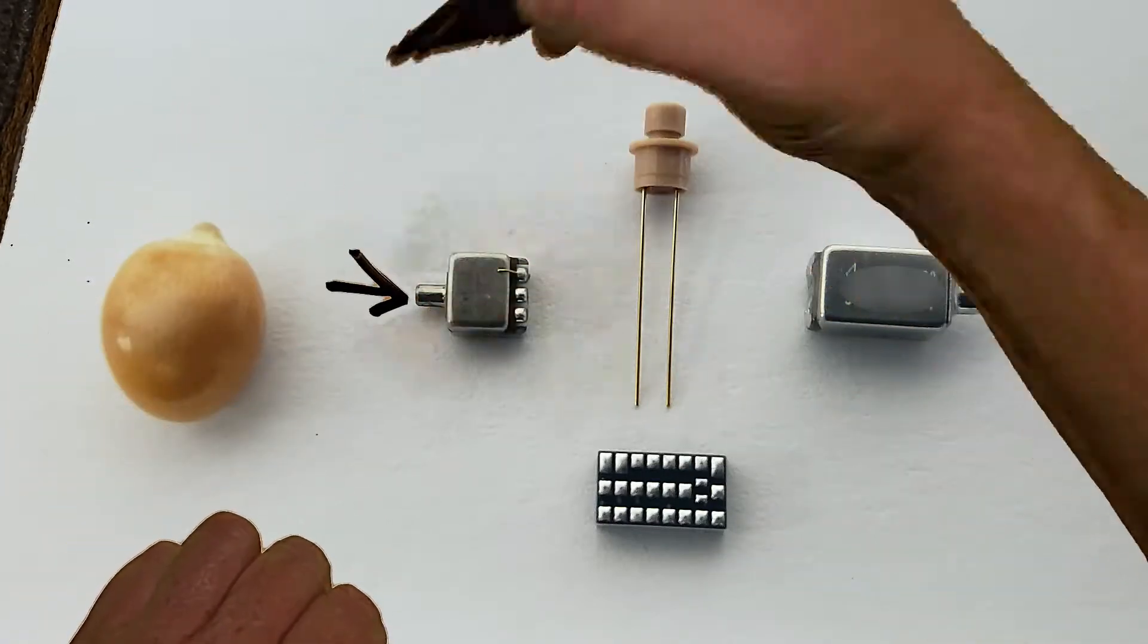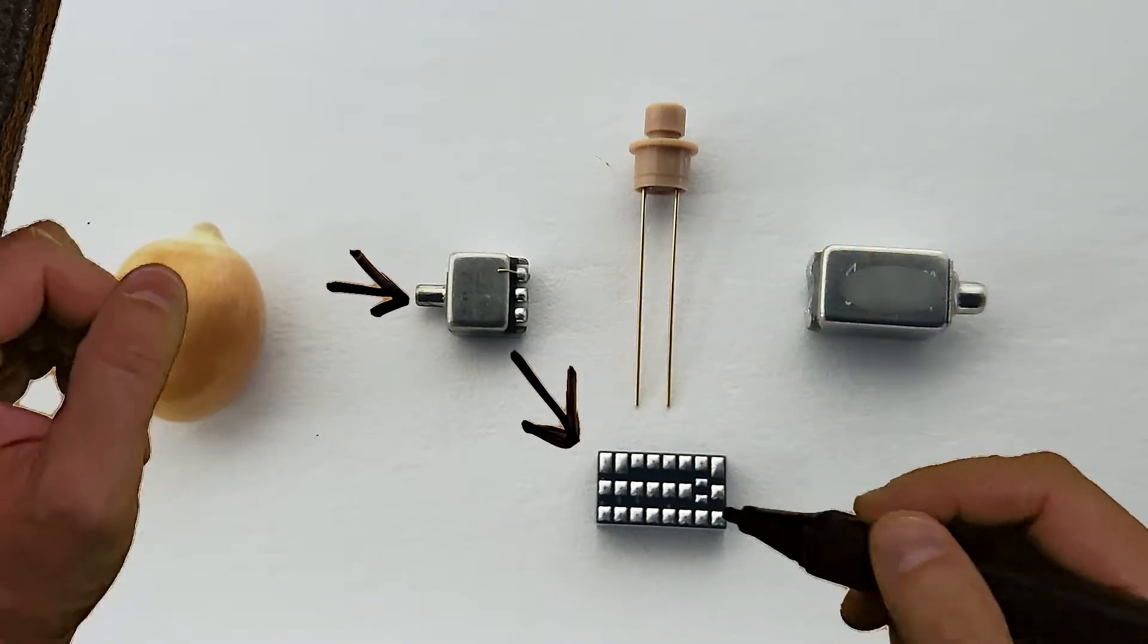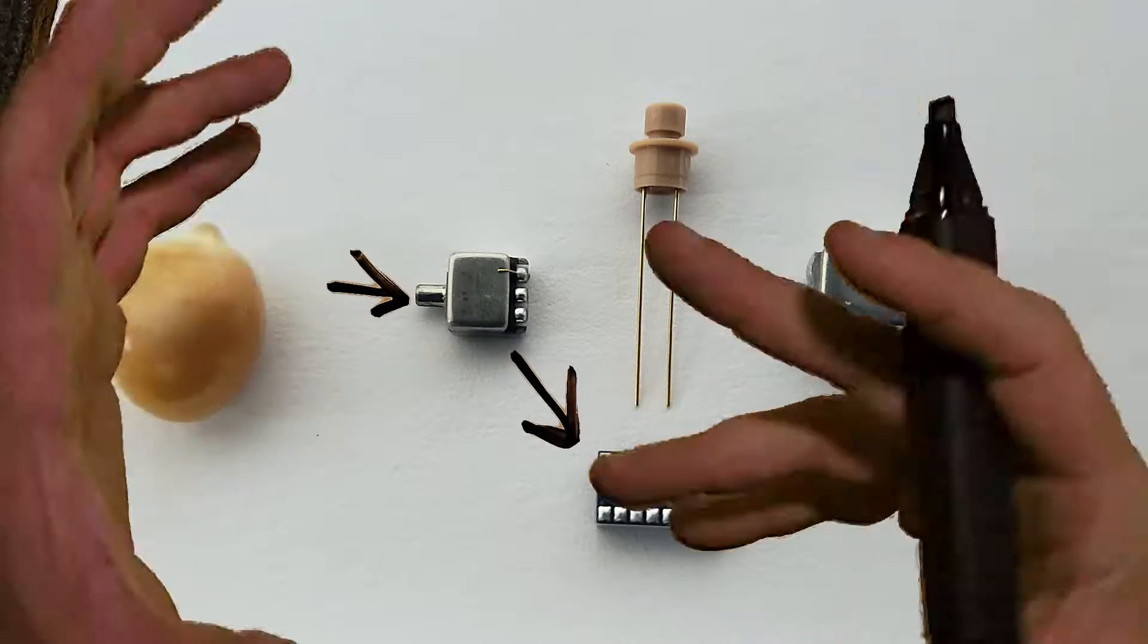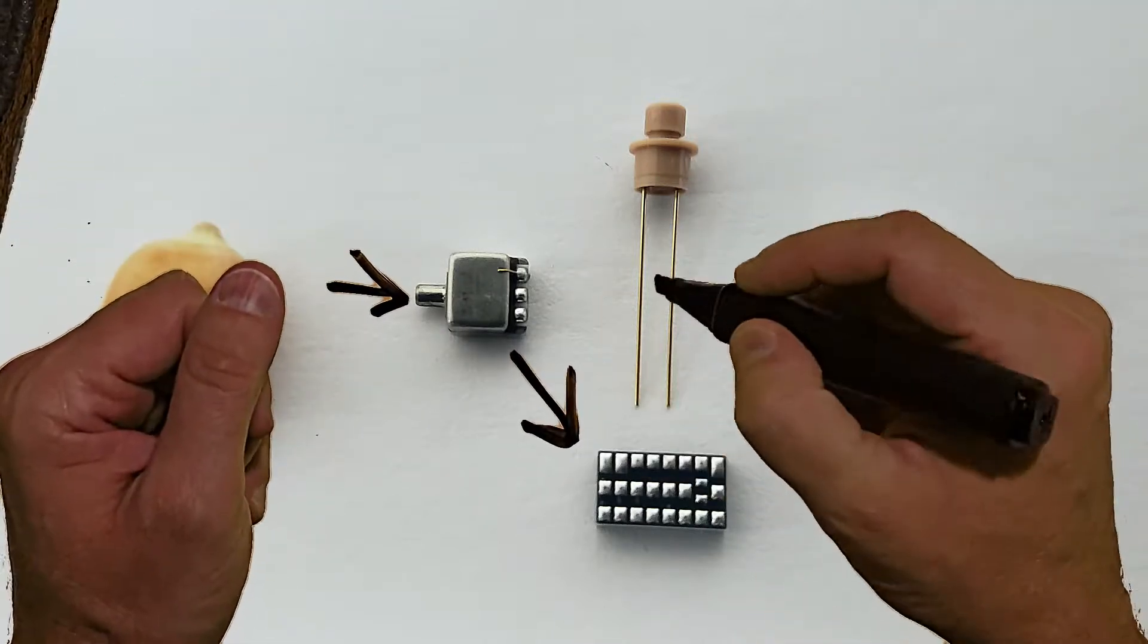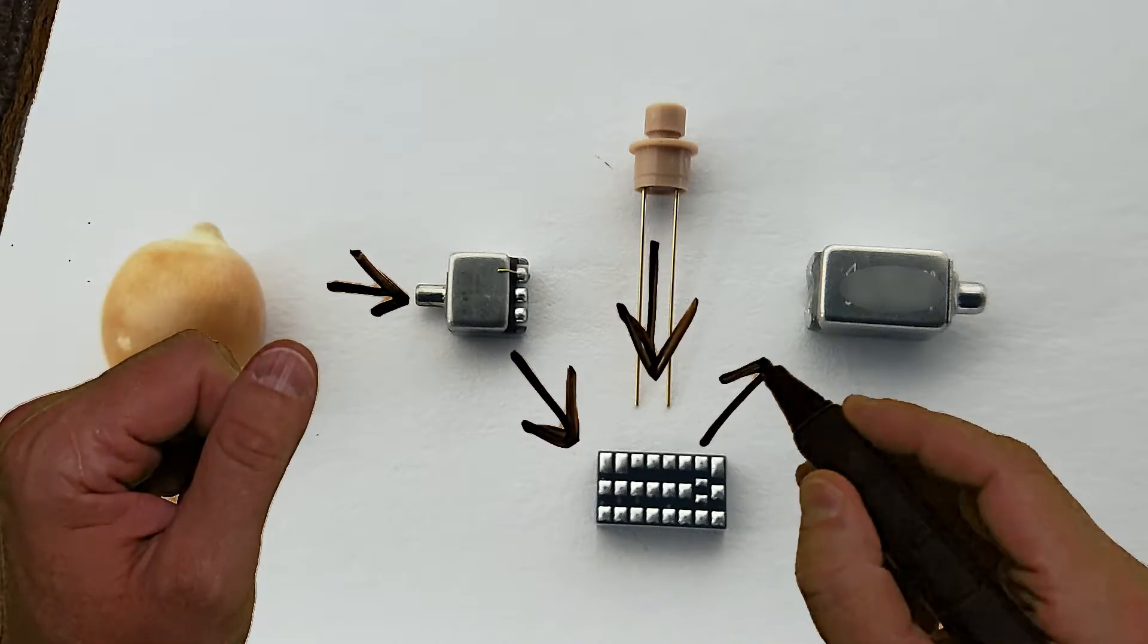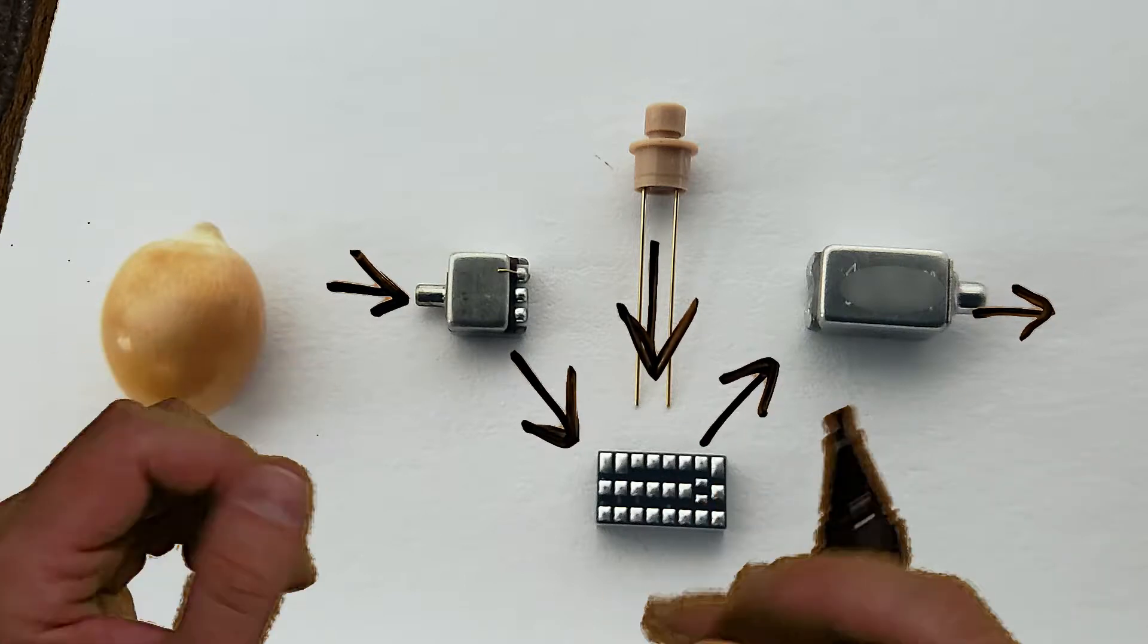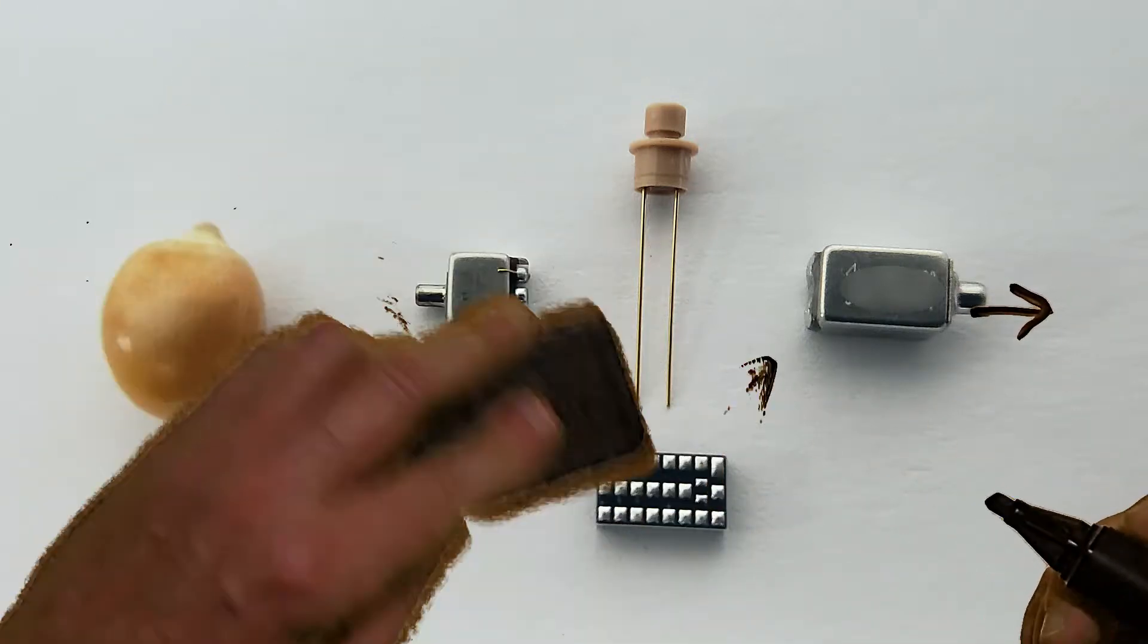The microphone takes sound from the outside world and sends it to the digital processor, which adjusts its frequency range or volume. You may or may not have a control to adjust the volume. From there, it sends the signal to the speaker or receiver of the hearing aid, which sends it out to your eardrum and helps you hear better.